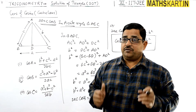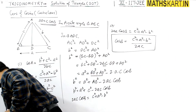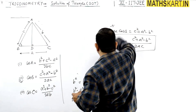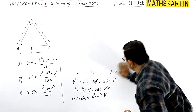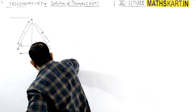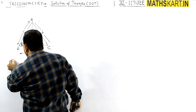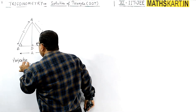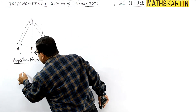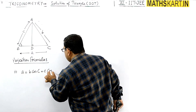There are three projection formulas, and proving them is the easiest. Since three perpendiculars can be dropped, there are three projection formulas. The first projection formula is: a = b·cos C + c·cos B, where 'a' is the side and B, C are the angles.